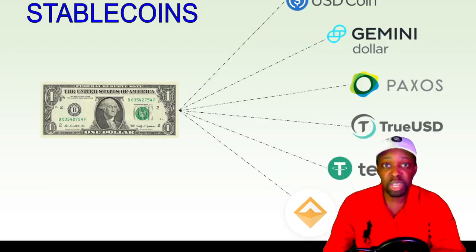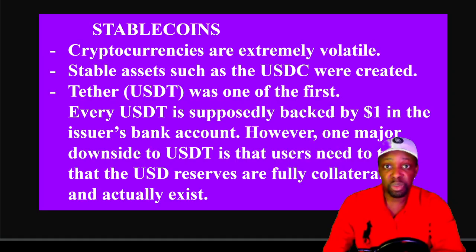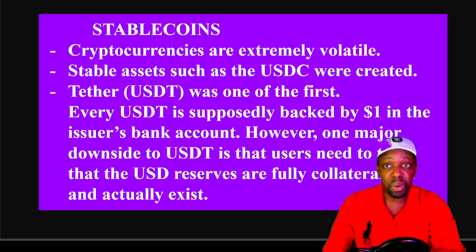Stable coins are used because crypto is volatile. They peg to the US dollar so when volatility gets high and you're uncomfortable, instead of cashing out to fiat you can cash out to a stable coin. Examples include USDC, Gemini, Paxos, TrueUSD, Tether, and LUSD. Tether was one of the first stable coins — every USDT was supposedly backed by one dollar in the issuer's bank account. However, the downside is you have to trust them since the bank account is centralized and not publicly visible.